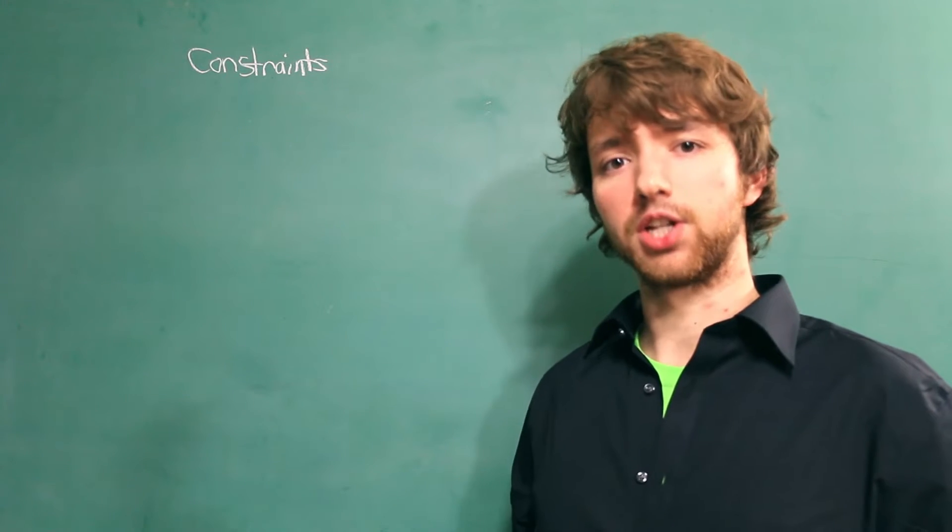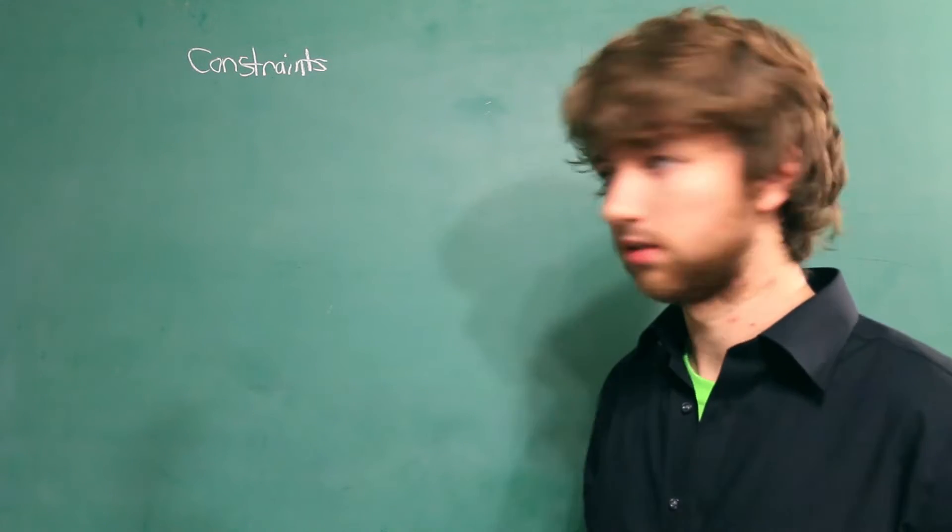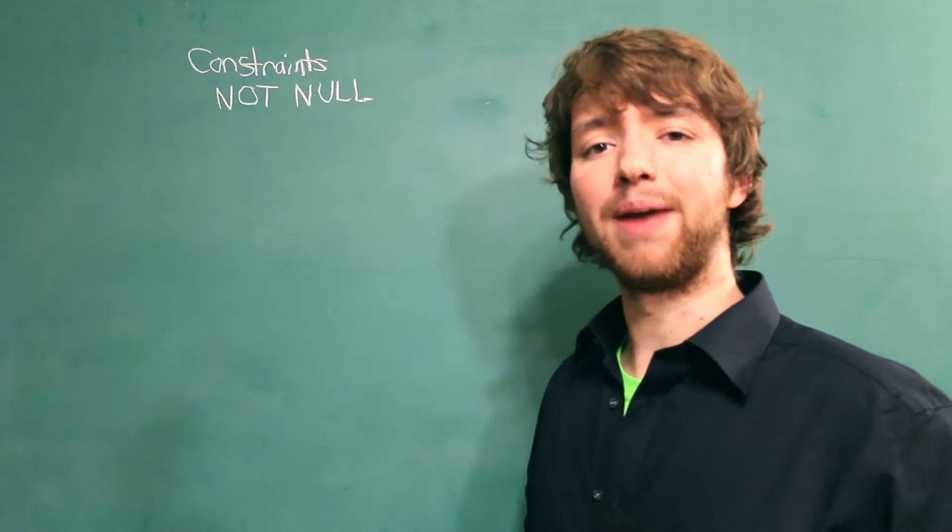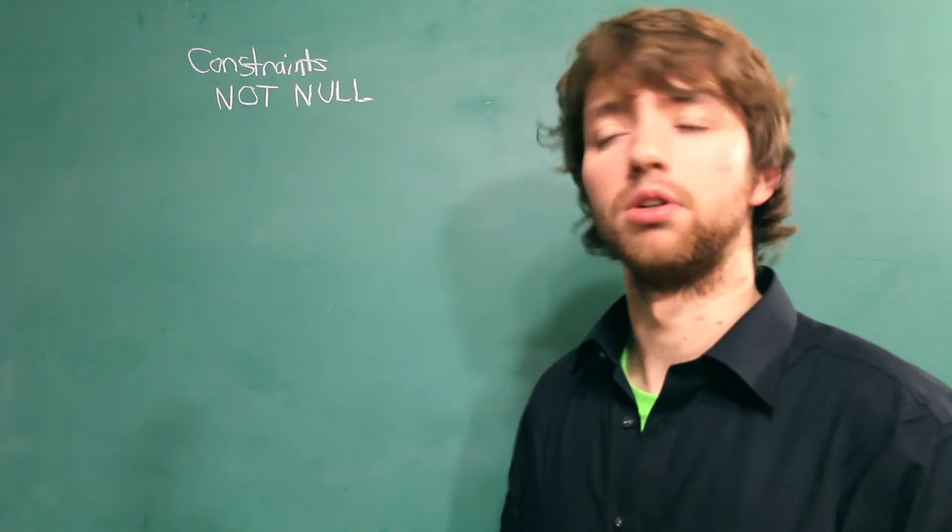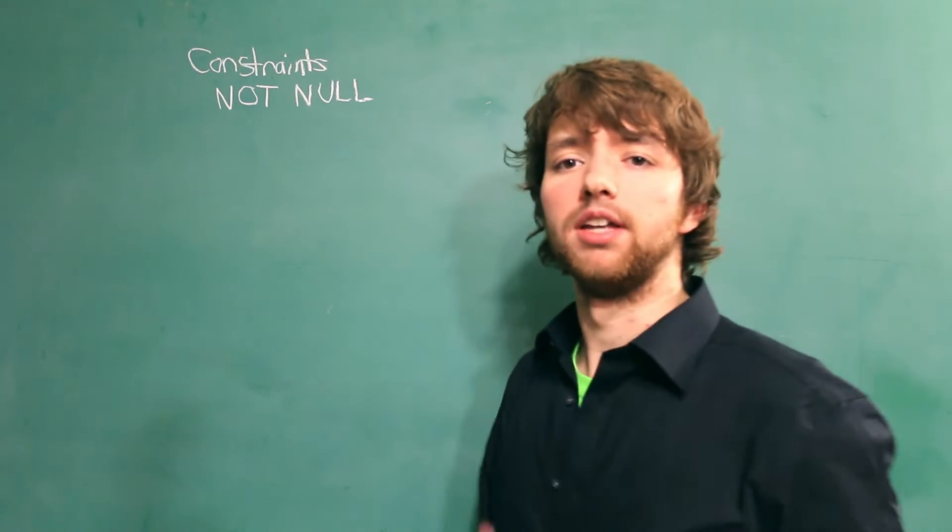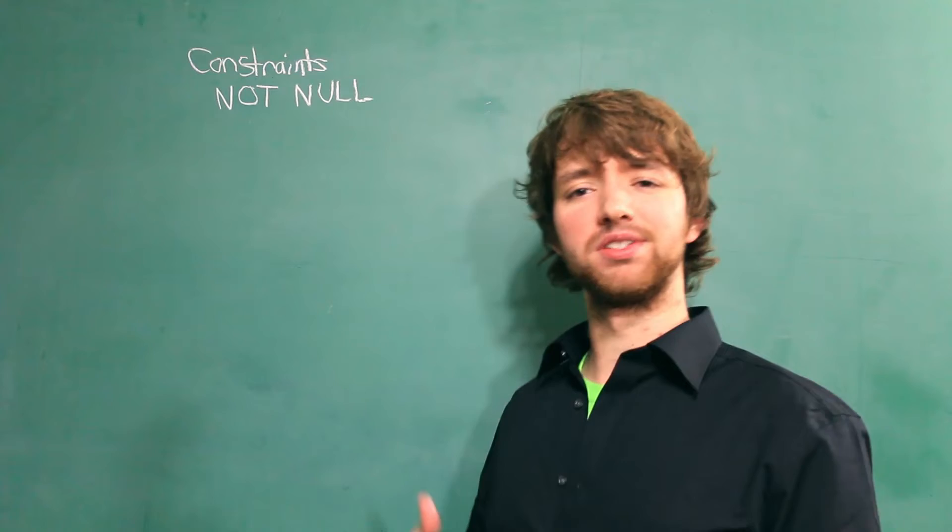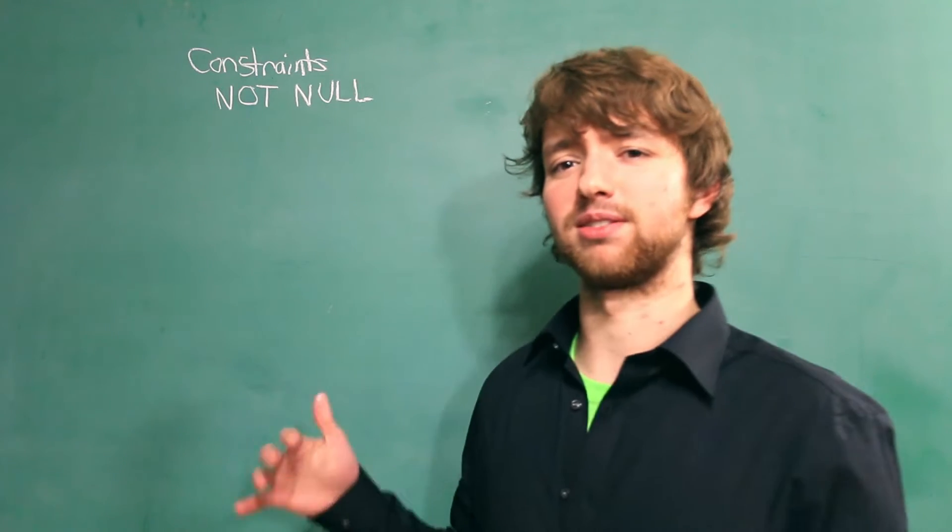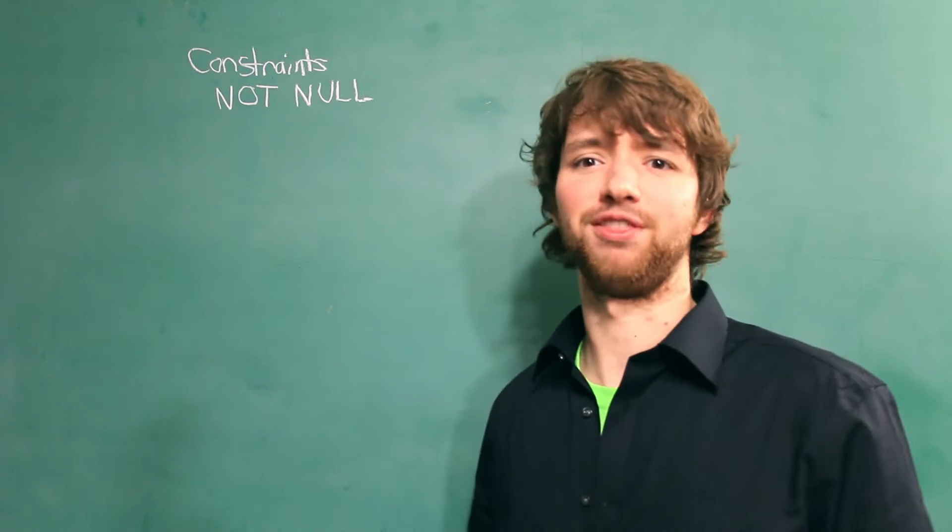The first constraint is NOT NULL. This is when you command a column to always require a value. A null is the absence of a value. And something that kind of bugs me is when people say a null value. Because it's like saying a nothing something.